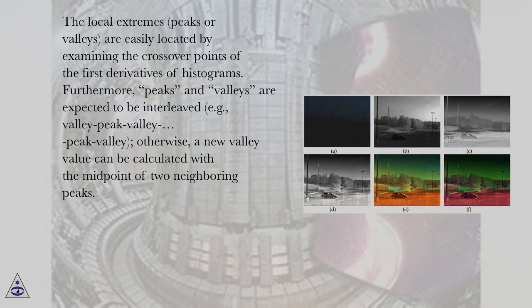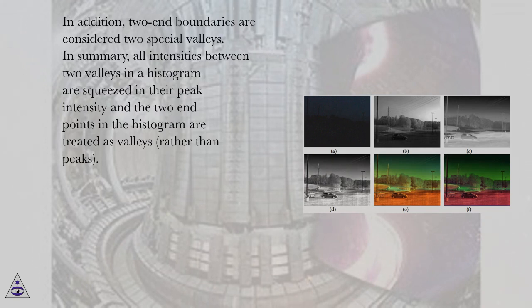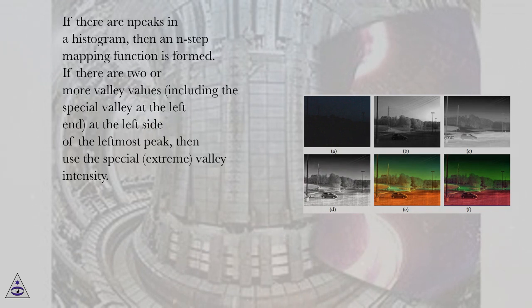The local extremes, peaks or valleys, are easily located by examining the crossover points of the first derivatives of histograms. Furthermore, peaks and valleys are expected to be interleaved — for example, valley-peak-valley. Otherwise, a new valley value can be calculated as the midpoint of two neighboring peaks. In addition, the two end boundaries are considered two special valleys. In summary, all intensities between two valleys in a histogram are squeezed to their peak intensity, and the two end points in the histogram are treated as valleys rather than peaks. If there are peaks in a histogram, then a stepwise mapping function is formed.